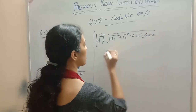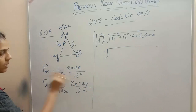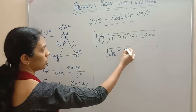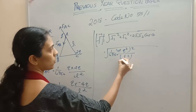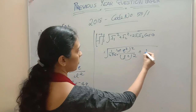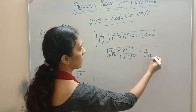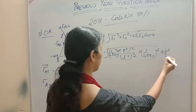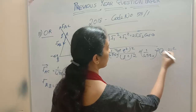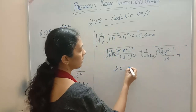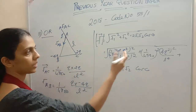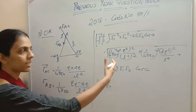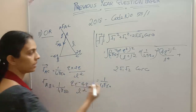Magnitude of the resultant electric force: F equals root of F1 square plus F2 square plus 2 F1 F2 cos theta. So here it is root of: magnitude of F1 square = (1 by 4 pi epsilon 0) times (2Q squared) divided by L squared, the whole squared, plus (1 by 4 pi epsilon 0) times (4Q squared) divided by L to the power 4, plus 2 F1 F2 cos theta. Here 1 by 4 pi epsilon 0 is common.